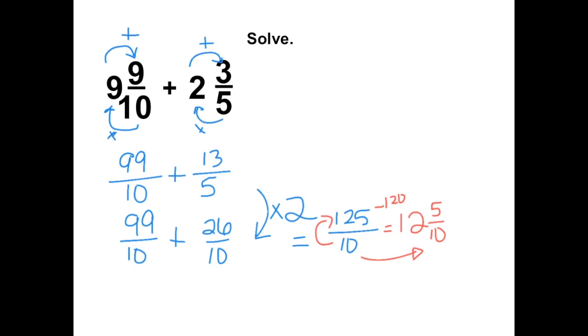The last step is to simplify. 5 over 10 can be simplified to 1 half. So the final answer is 12 and 1 half.